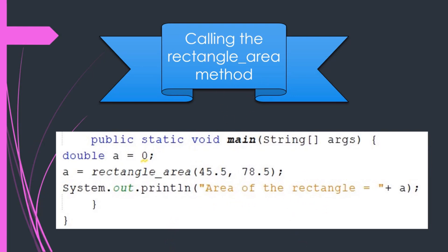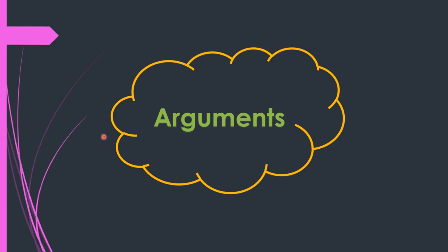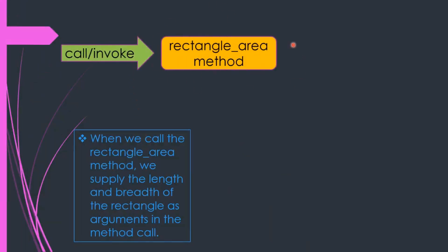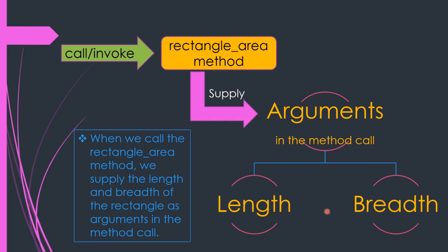The coding has various parts, and one important part is arguments. When we call or invoke the rectangle area method, we have to supply arguments. Arguments are basically the values we supply when calling a method. In this example, we will supply the length and the breadth of the rectangle, so length and breadth will act as arguments in the method call.